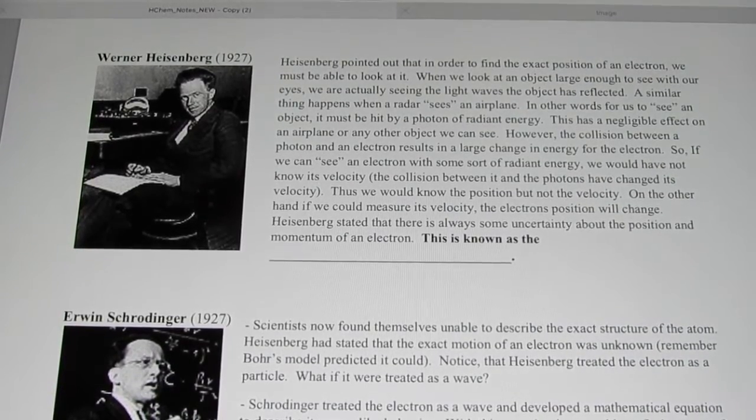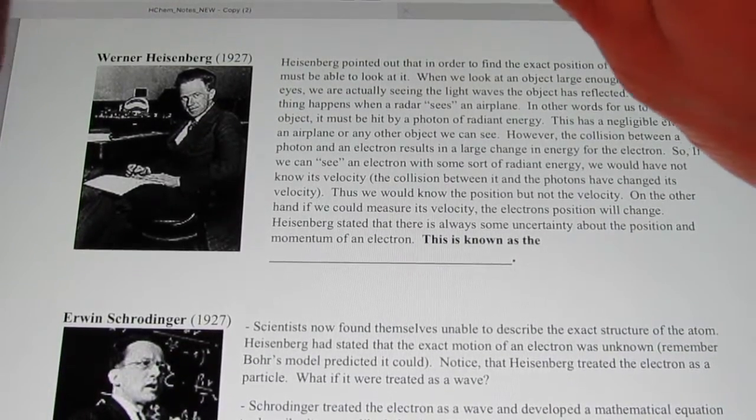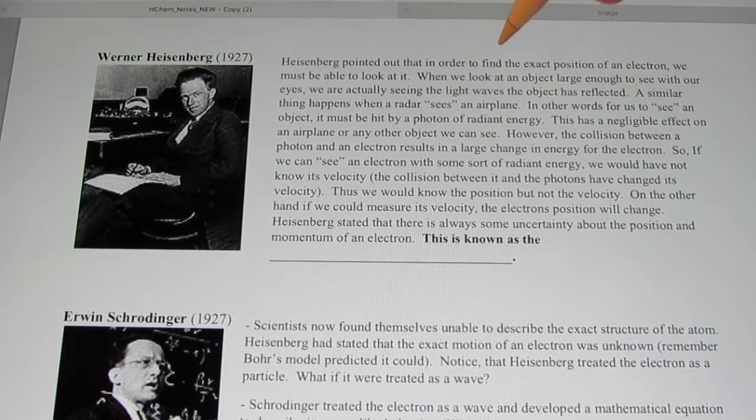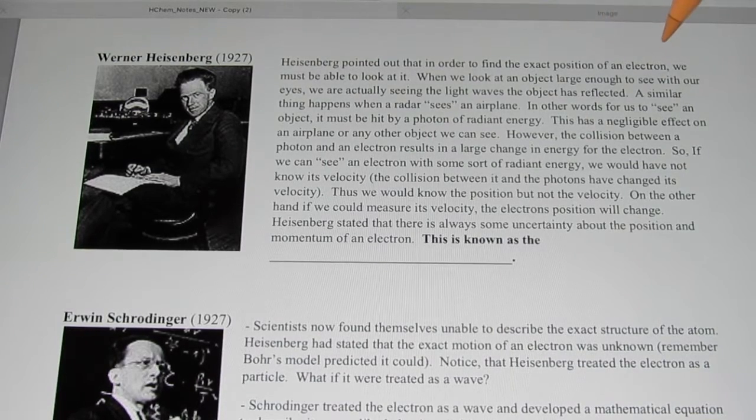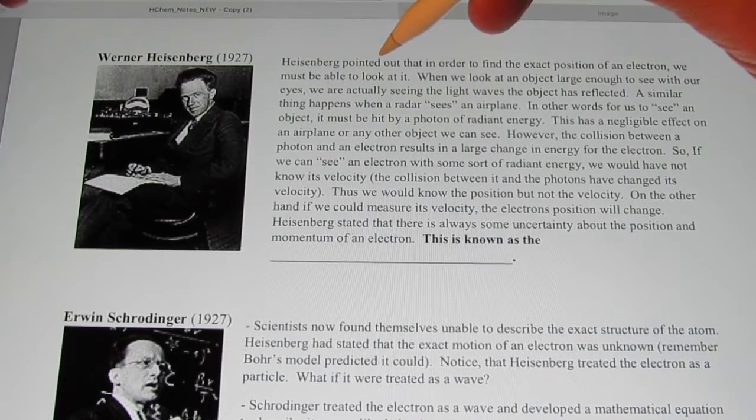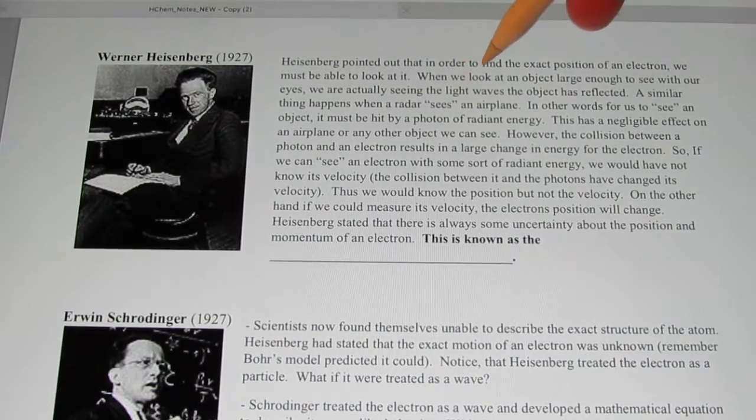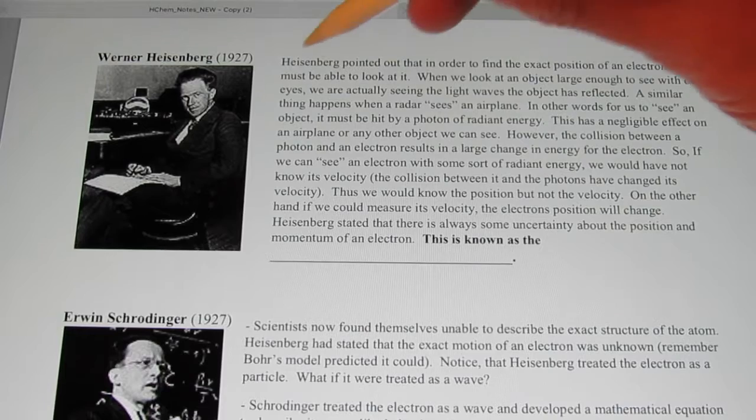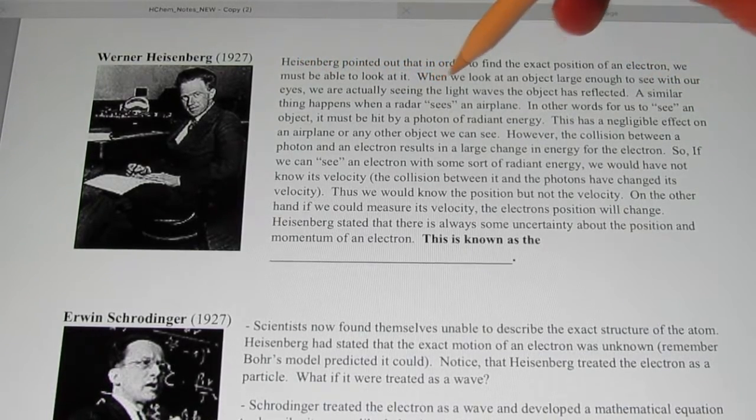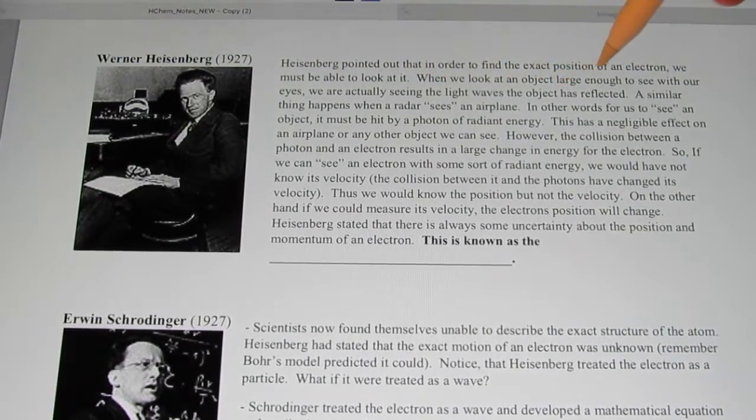Along with de Broglie, Werner Heisenberg was on the scene. He pointed out that in order to find the exact position of an electron, we must be able to look at it. That makes sense. However, when we look at an object large enough to see with our eyes, we're actually seeing the light waves that the object has reflected.